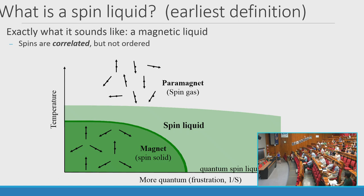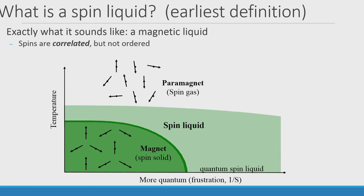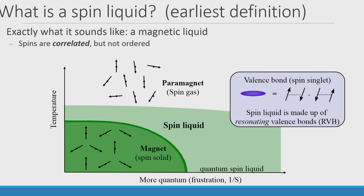The earlier definition from Anderson is a simple picture where you can think of a spin liquid just like a normal liquid — essentially a magnetic liquid. The analog of a spin solid would be an ordered magnet; the analog of a spin gas would be a totally disordered paramagnet. A spin liquid is something in between where spins know about neighboring spins but not about spins at infinite distances — correlated but without long-range order. We describe these using valence bonds, spin singlets on neighboring or further sites, and you can think of a spin liquid as made of resonating valence bonds.